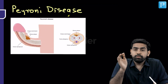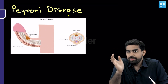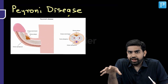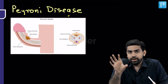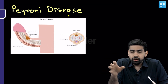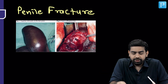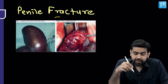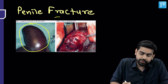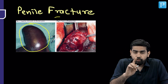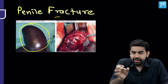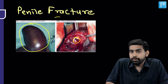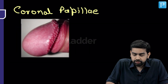Peyronie's disease involves formation of a fibrous plaque at the tunica albuginea, causing curvature of the penis. The plaque is felt better in the flaccid condition, while the curvature is better appreciated in the erect condition. Penile fracture is a breach in the tunica albuginea — the characteristic finding is the eggplant (brinjal-shaped) deformity, which occurs when Buck's fascia is intact. It is a surgical emergency repaired with a non-absorbable suture.